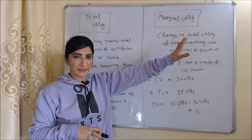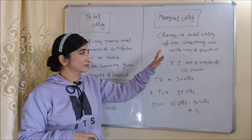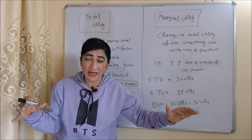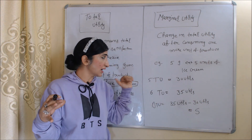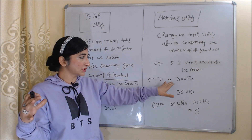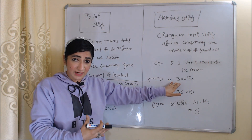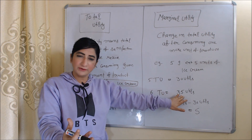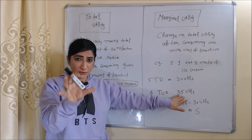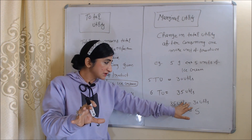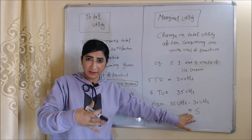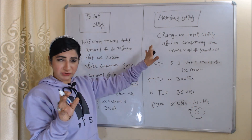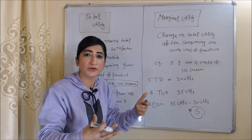Marginal utility is the change in total utility after consuming one more unit of product. For example, when I eat 5 units of ice cream my total utility is equal to 30 utils, but as I increase one more unit — at 6 units of ice cream — my total utility is equal to 35 utils. So the change in total utility is 35 minus 30, which equals 5. This 5 will be called marginal utility.